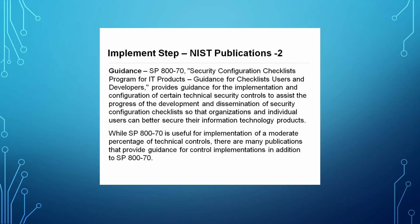The NIST publication used for the implement step of the NIST Risk Management Framework is NIST SP 870. It is the security configuration checklist program for IT products and provides guidance for checklist users and developers. It provides guidance for the implementation and configuration of certain technical security controls to assist the development and dissemination of security configuration checklists so that organizations and individual users can better secure their IT products.